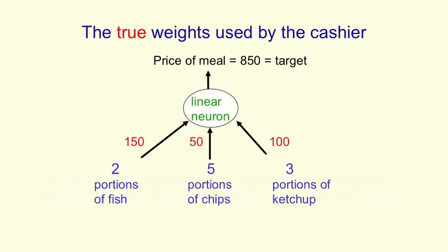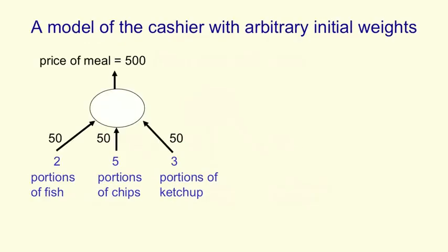Suppose the true weights the cashier is using are 150 for a portion of fish, 50 for a portion of chips, and 100 for a portion of ketchup. For the meal shown here, that leads to a price of 850 — that's our target value. If we start with guesses that each portion costs 50, then for a meal with two portions of fish, five of chips, and three of ketchup, we'd initially estimate the price as 500. That gives us a residual error of 350, which is the difference between what the cashier says and what we think the price should be with our current weights.